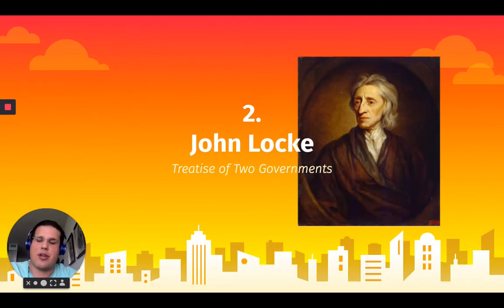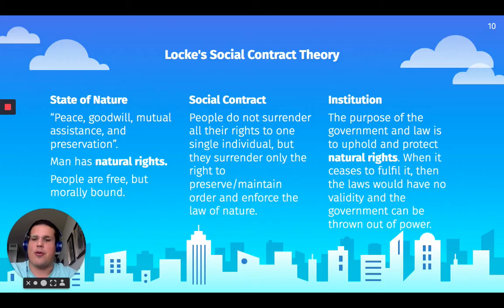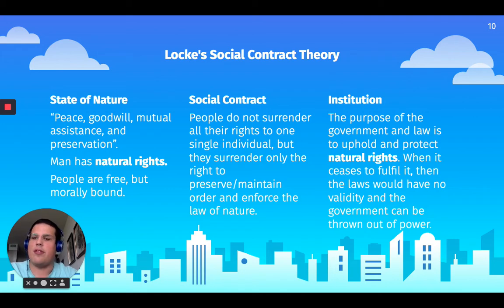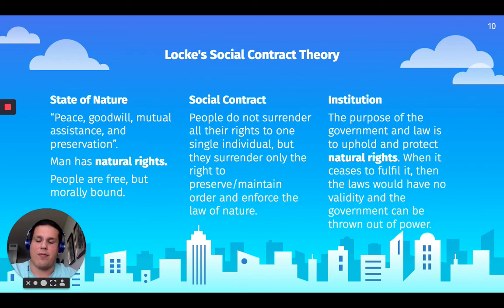The second social contract theory is John Locke's Two Treatises of Government. John Locke established that we need basic rights in order to be able to create a union, so John Locke is going to be following what we call pactum unionis. The state of nature is peace, goodwill, mutual assistance, and preservation. Man has natural rights — the fundamental rights are going to be life, liberty, and property.